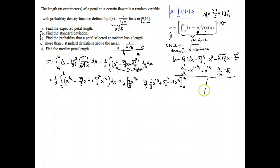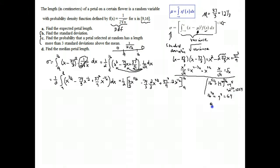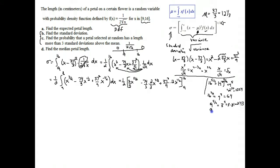Now we evaluate. 16 to the 5 halves is 4 to the 5th, which equals 2 to the 10th — that's 1024, a number memorized from computing. 16 to the 3 halves is 4 cubed, which is 64. 9 to the 5 halves is 3 to the 5th, which is 3 times 81, or 243. And 9 to the 3 halves is 3 cubed, which is 27. These numbers will get plugged in.